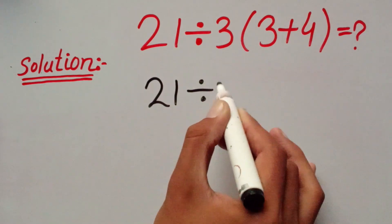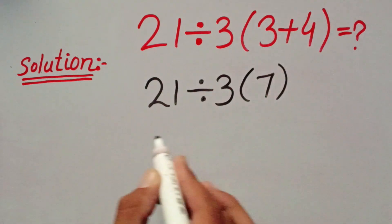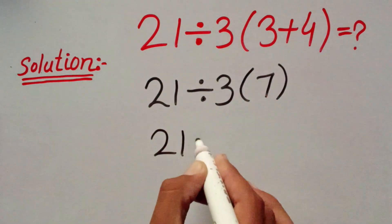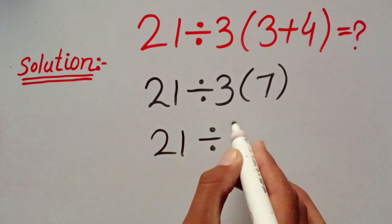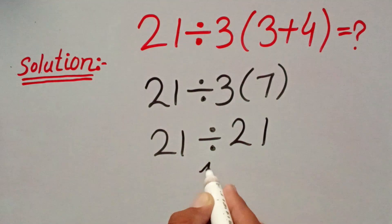21 divided by 3, 3 plus 4 equals 7. And then 21 divided by 3 times 7 equals 21. 21 divided by 21 equals 1. But this answer is wrong.